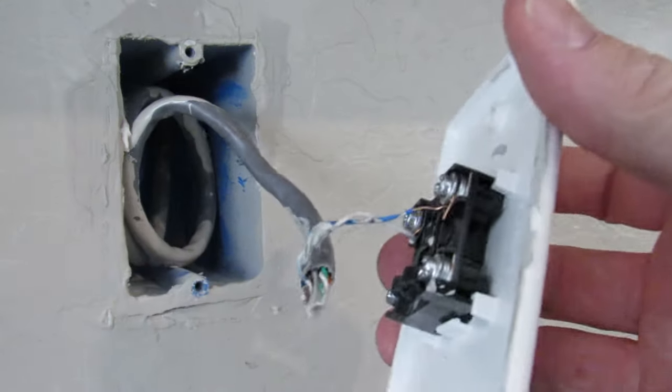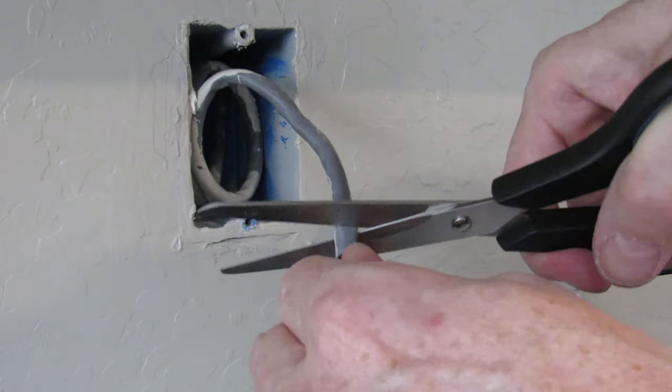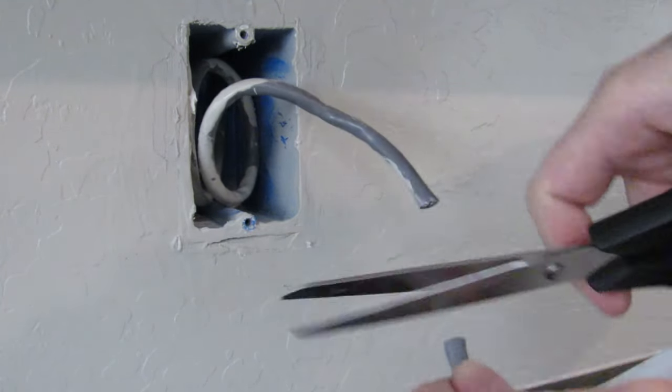Once the face plate is removed you can see the wires are exposed, the Cat6 wires, and you can see the two blue wires, the blue and the blue white that connect the phone jack. Just go ahead and cut that wire and throw away the phone jack plate.